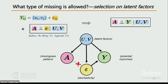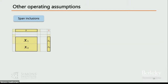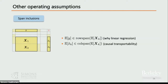At the same time, this framework still allows the probability of observing an entry to be exactly zero, allows correlations between entries of A, and allows M to not be independent of A. The key operating assumptions are span inclusions: for every block k, the row span of E[X_k] includes the row span of E[Y], meaning Y can be represented as a linear combination of X_k. The column-side span inclusion is a linear algebraic take on causal transportability, which is an important topic in machine learning.